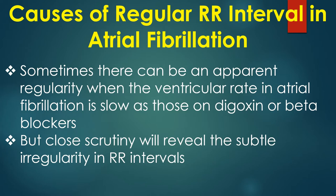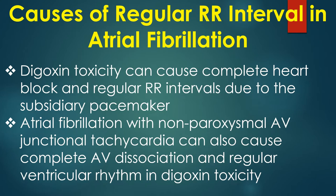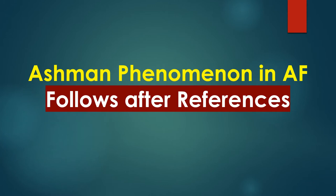Sometimes there can be an apparent regularity when the ventricular rate in atrial fibrillation is low, as in those on digoxin or beta blockers, but close scrutiny will reveal subtle irregularity in RR intervals. Digoxin toxicity can cause complete heart block and regular RR intervals due to the subsidiary pacemaker in atrial fibrillation. Atrial fibrillation with paroxysmal AV junctional tachycardia can also cause complete AV dissociation and regular ventricular rhythm in digoxin toxicity.